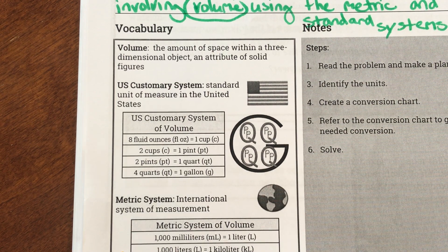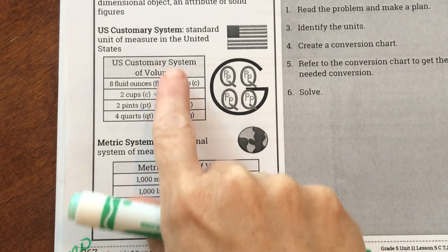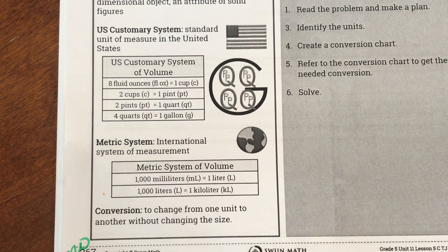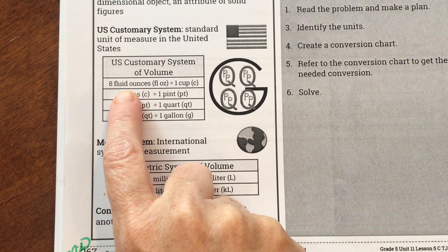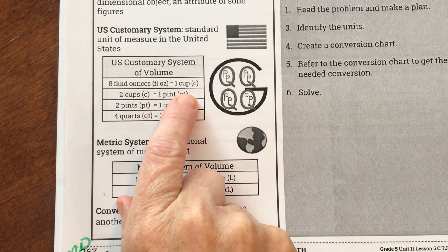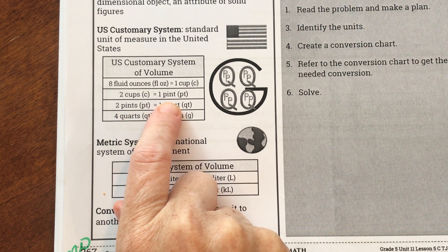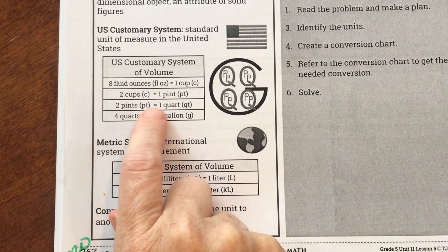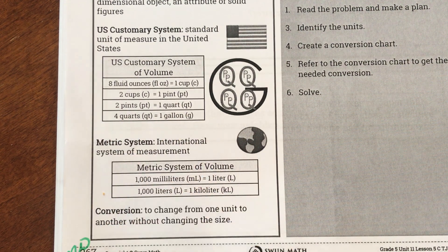We have our two different measurement systems. For the US customary system, here are the measurement units we're going to be using. Eight fluid ounces — fluid means liquid — equals one cup. Two cups equal one pint. Two pints equal one quart. And four quarts equal one gallon.